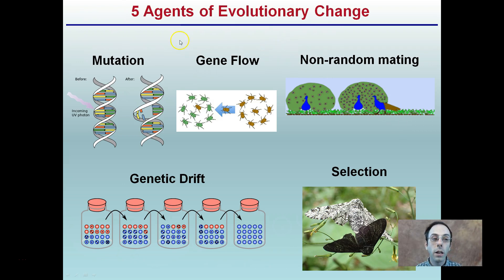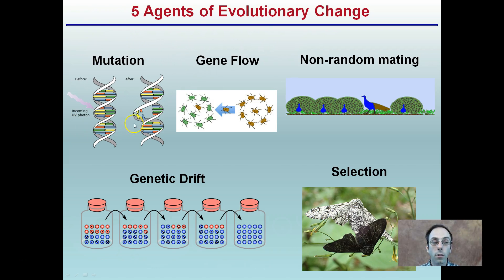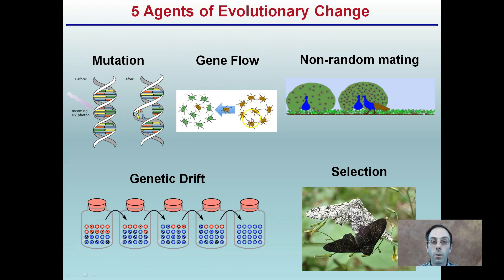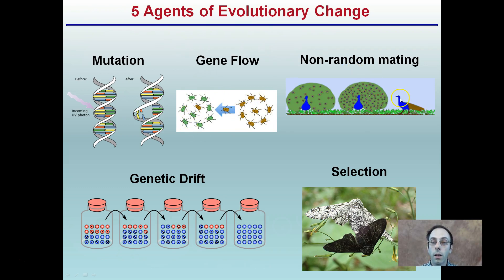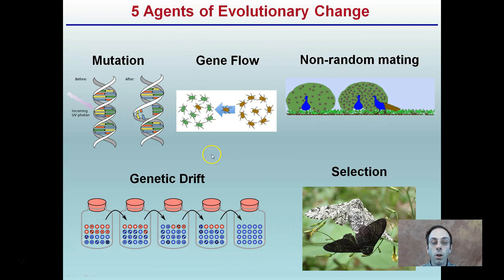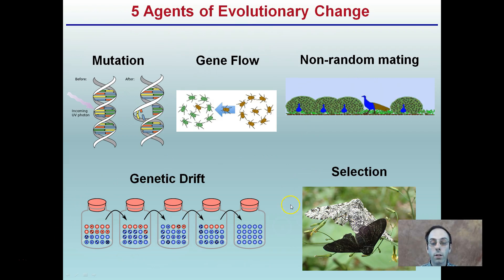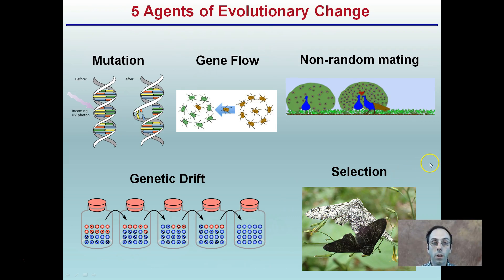So five agents for evolutionary change. One is mutation, which occurs normally with DNA polymerase and can also be influenced by the environment. Gene flow is the movement of genes from one population to another. Non-random mating is where a female chooses a male with showier feathers, resulting in a population that has shifted toward showier feathers. Genetic drift involves drifting toward a certain phenotype, and selection could favor one color that camouflages better compared to another.